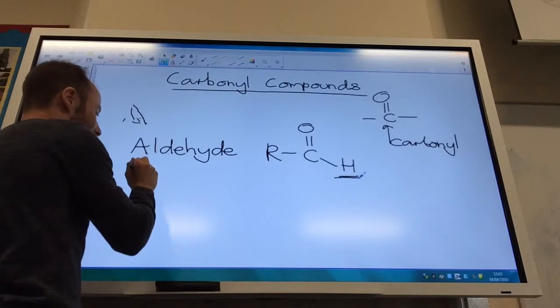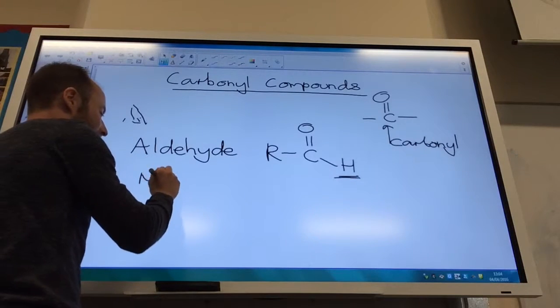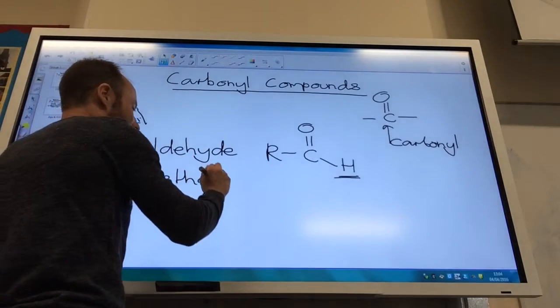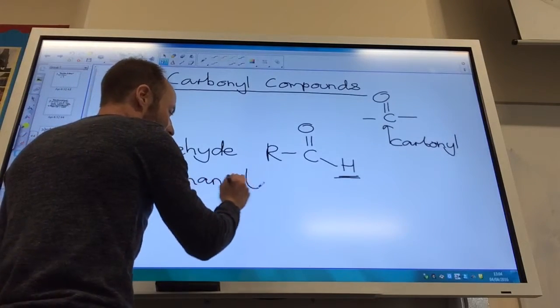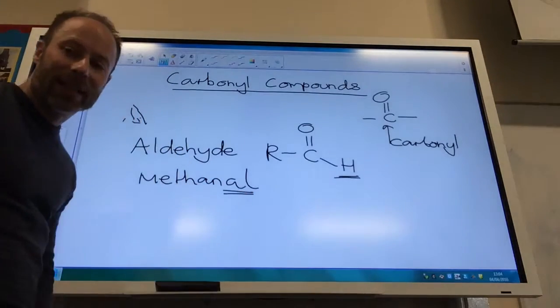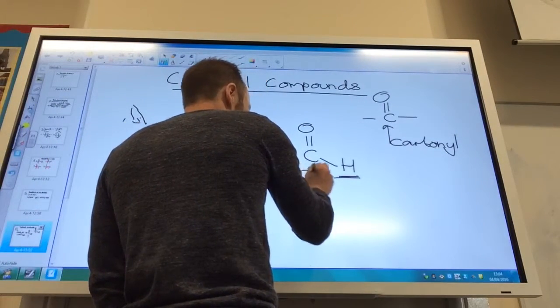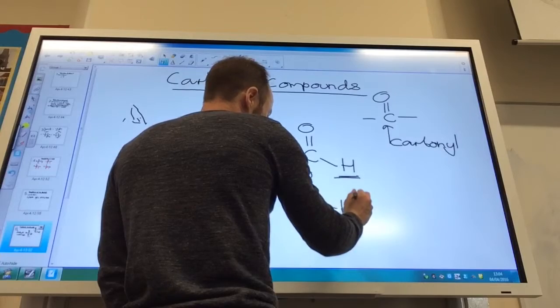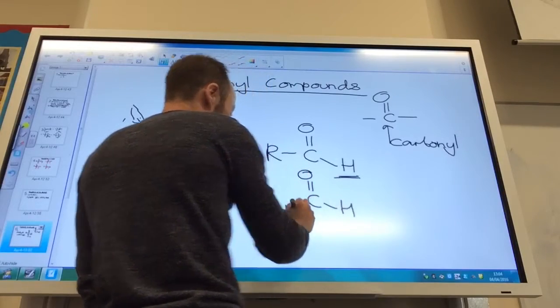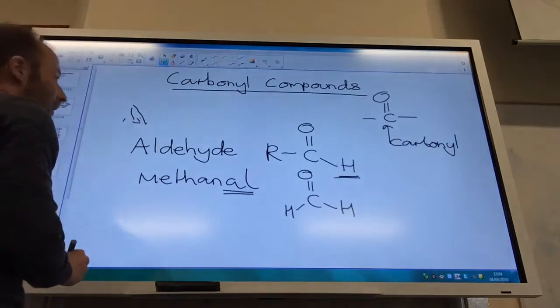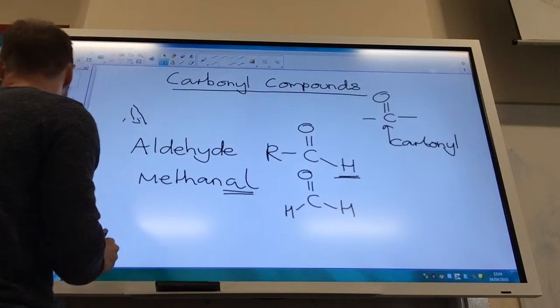The simplest aldehyde would be methanal. Notice aldehyde names end in -al. Methanal would just be C double bond O - I've only got one carbon, that's it.